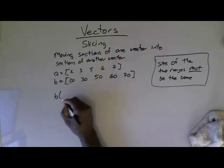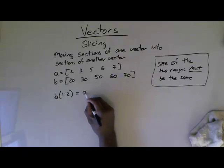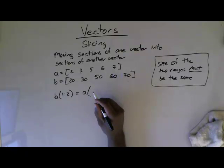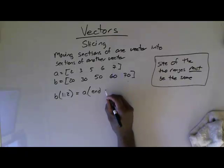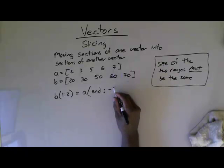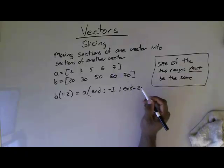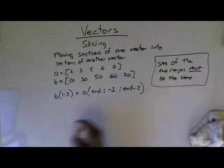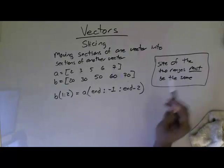Let's do another one here. B 1 to 2, this is going to look really strange, equals A from its end. You can use the end here. You don't have to do the length. You can use the end. The word end is the last element, colon, step negative 1, colon, end minus 2.